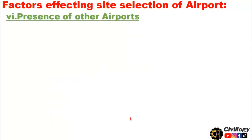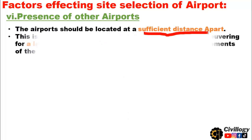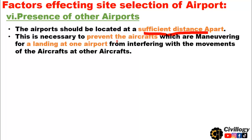The sixth point is the presence of other airports. The airport should be located at a sufficient distance apart from other airports. This is necessary to prevent aircraft maneuvering for a landing at one airport from interfering with the movements of aircraft at other airports.